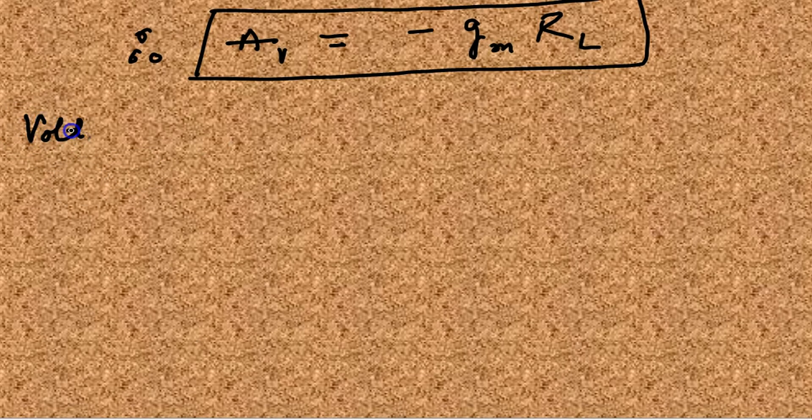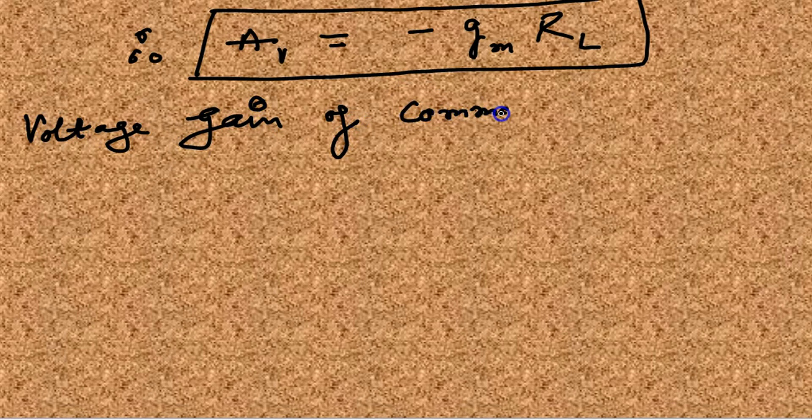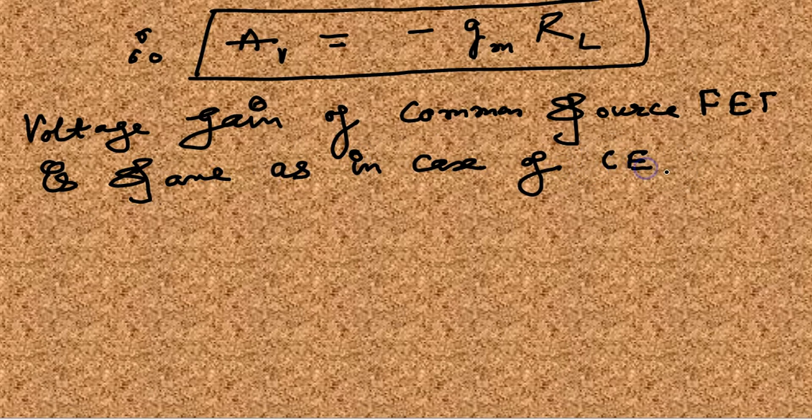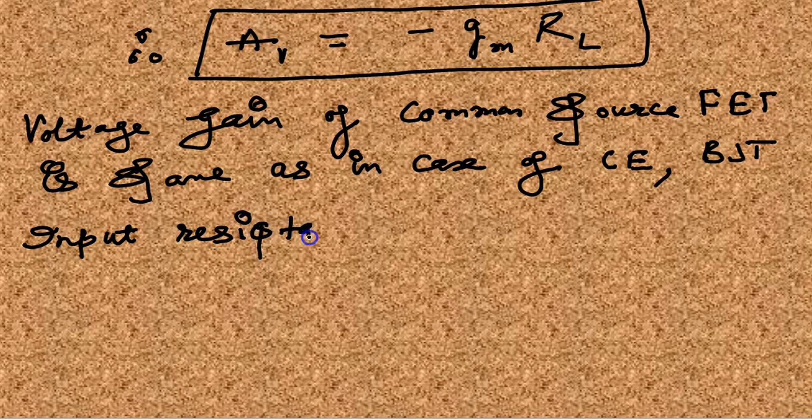The value of the voltage gain is the same as in the case of the common emitter configuration of a bipolar junction transistor. But FET is better than BJT because its input impedance is very very high.